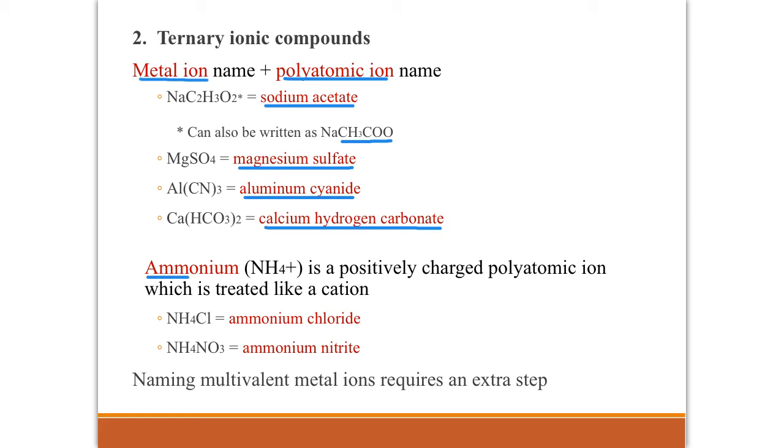Ammonium is the one odd polyatomic ion that has a positive charge. Its formula is NH4 and it has a plus one charge. And it's just treated like an ordinary cation using the name ammonium. So NH4Cl is ammonium chloride. And NH4NO3, so this would be two polyatomic ions put together actually. We have ammonium nitrate. This should be nitrate. That was the wrong word there. Sorry, nitrate. That I should be an A. Didn't catch my typo.